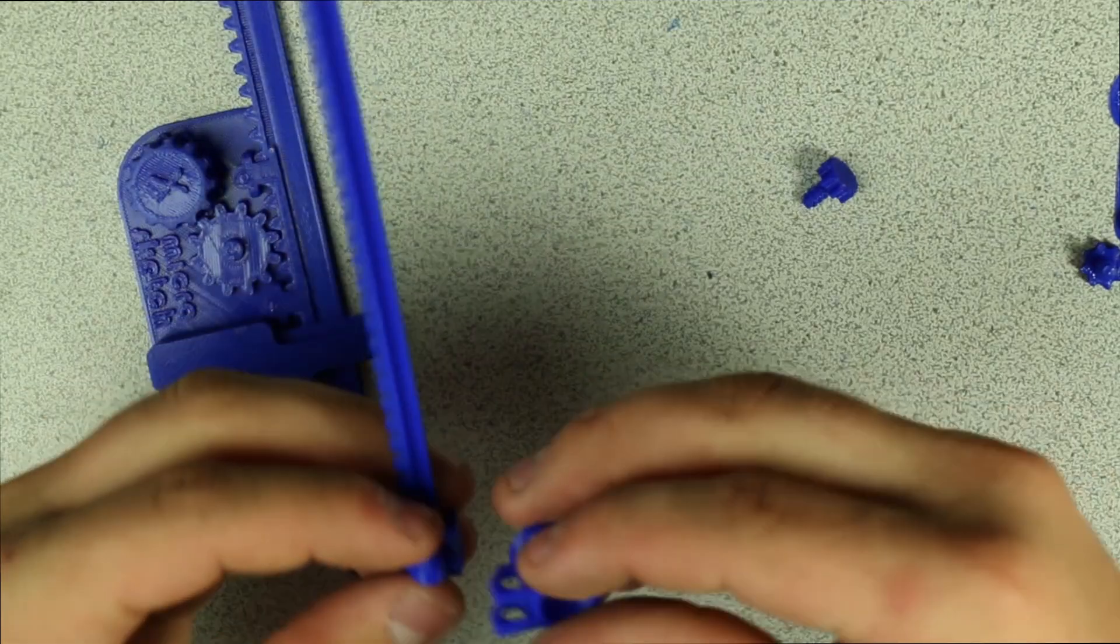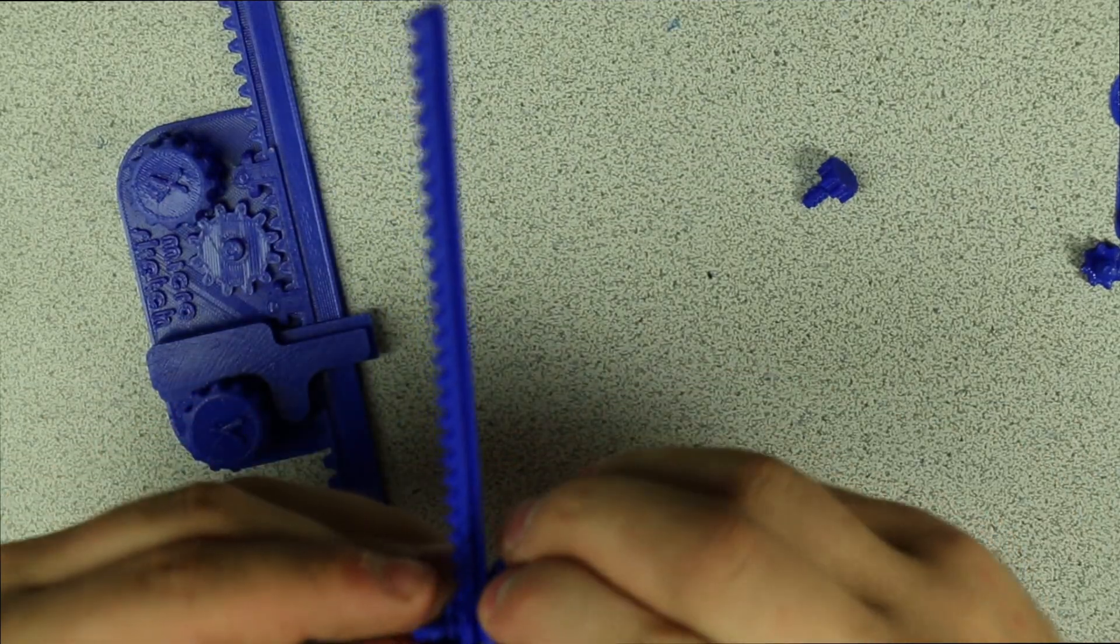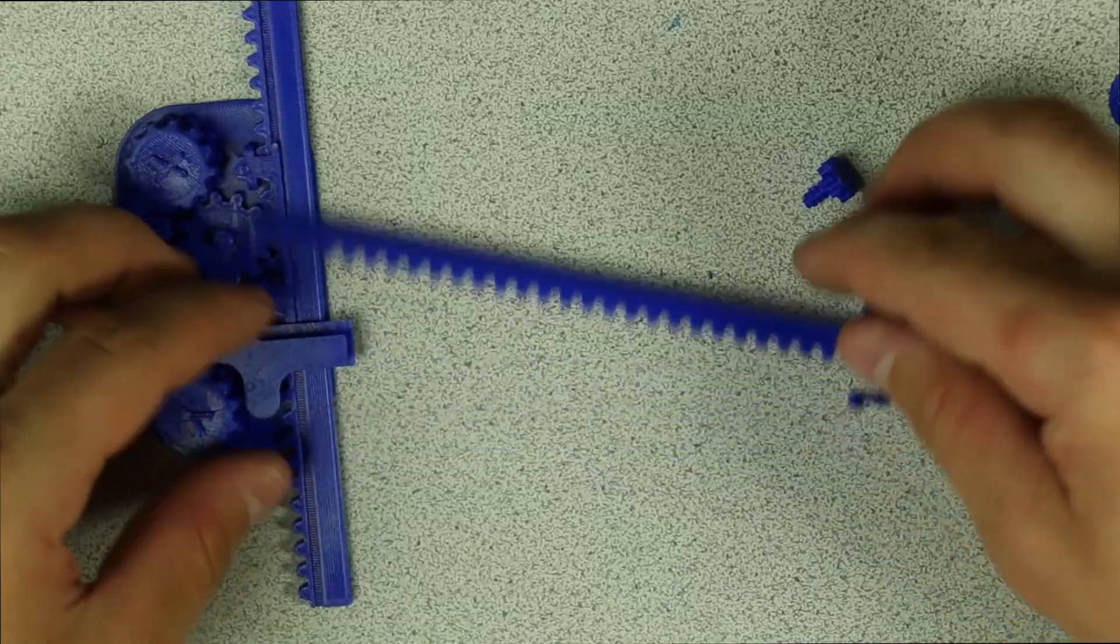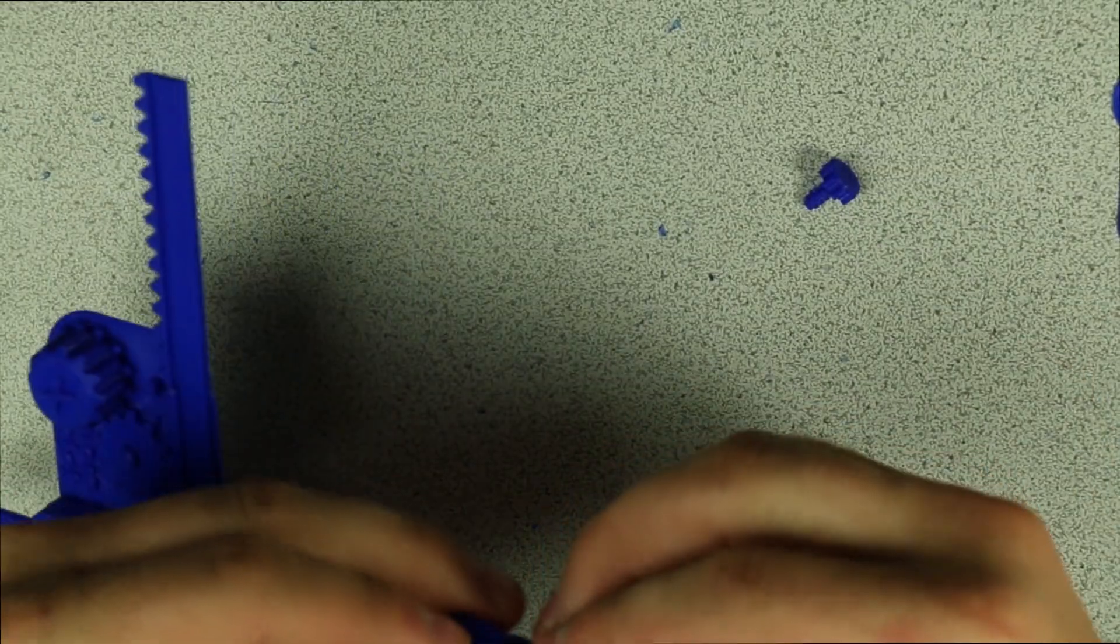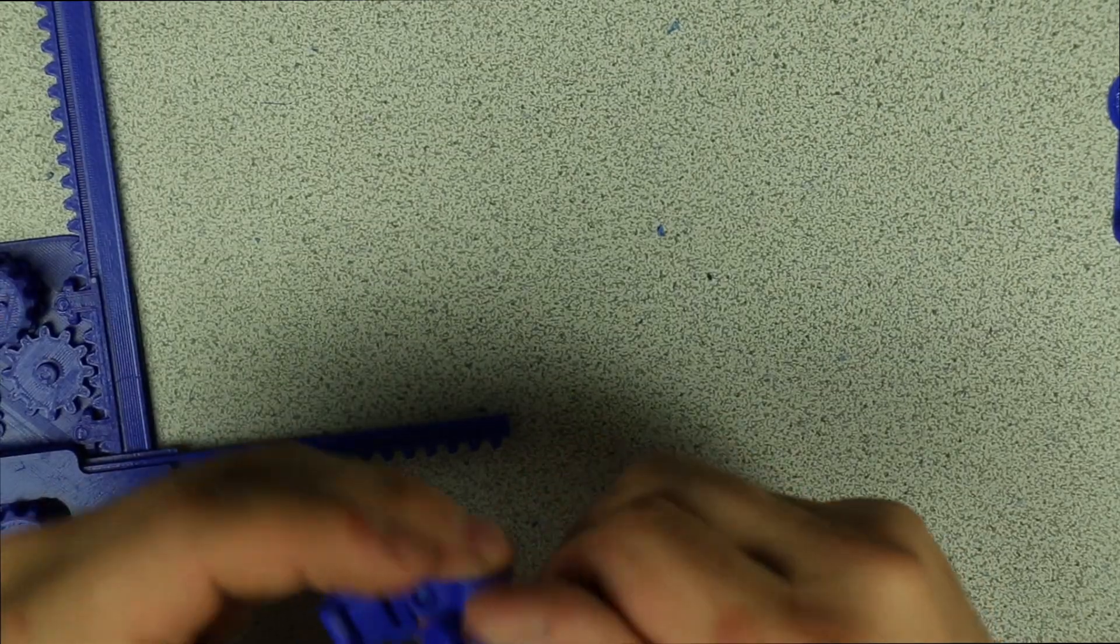So this piece assembles on here like so, and then this piece goes on like so. And then I loop all of this gadget here, and then these screw into the sides here, going in there like that. There you go.